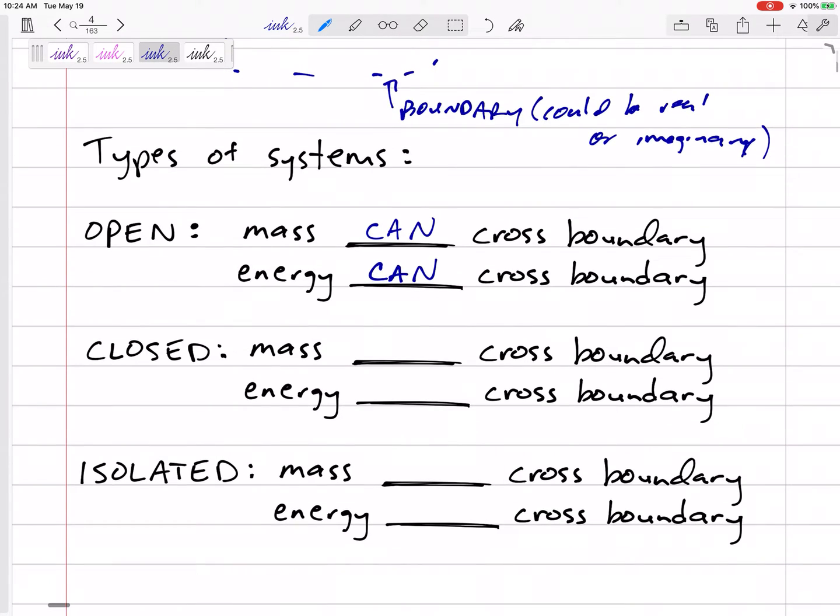But a closed system: mass cannot cross the boundary, but energy can still cross the boundary. If something is closed, let's say we've got a refrigerator or something in a tank and I've got it walled off, so nothing can go in or out - mass cannot cross the boundary.